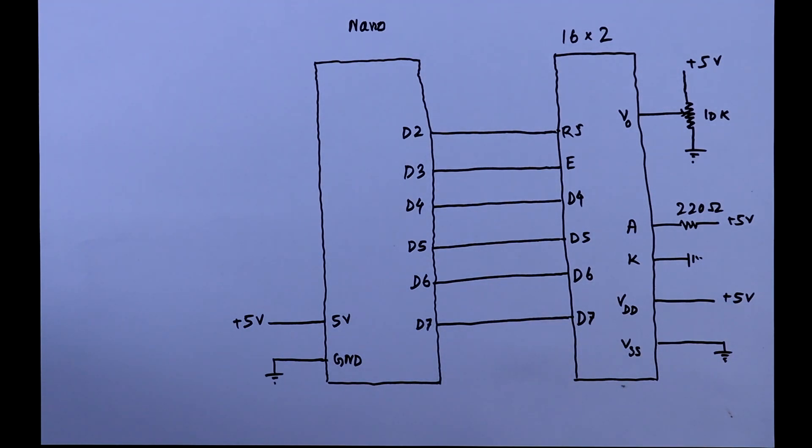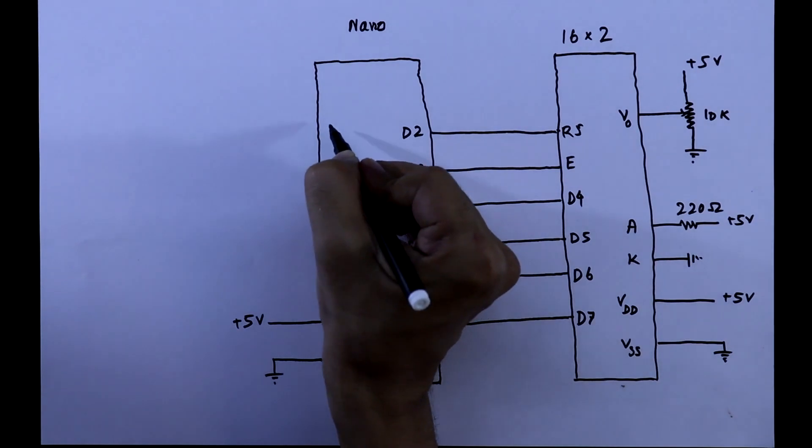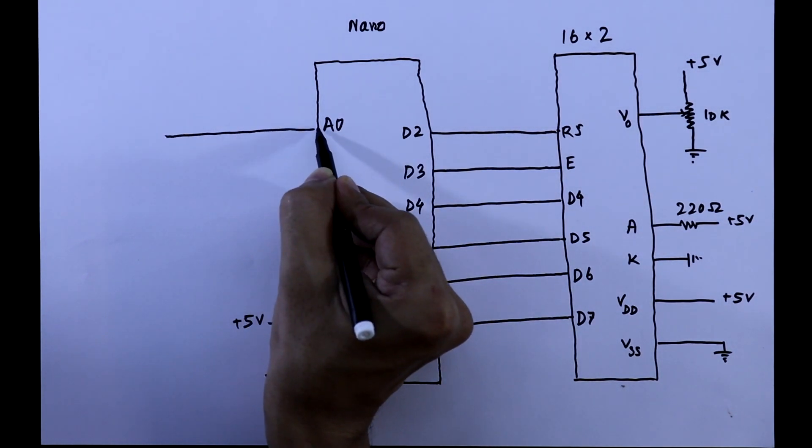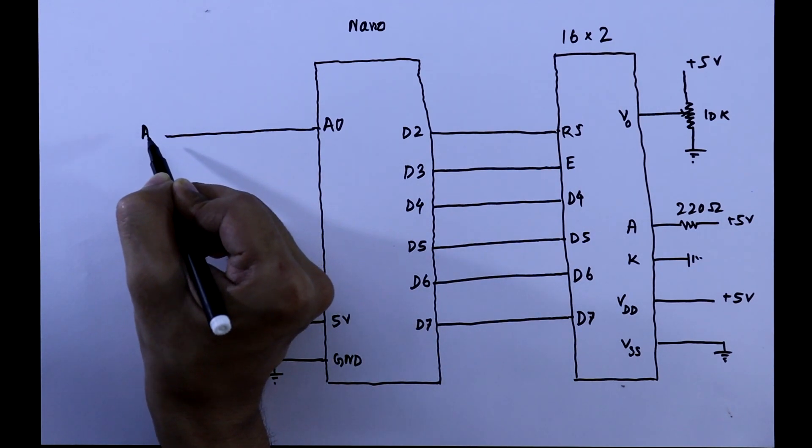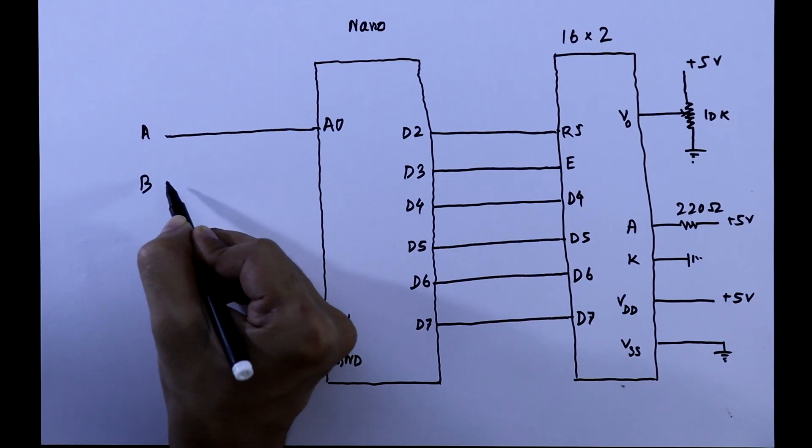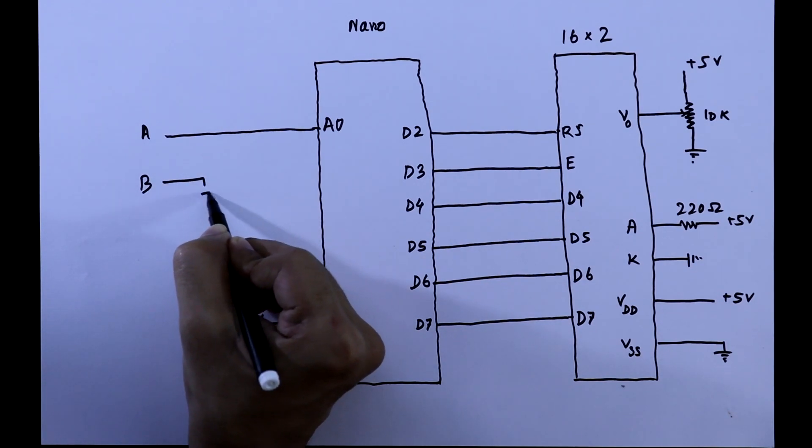Now we have to connect the test pin. For this we will use A0 pin. We will test the resistor to A0 pin and it is terminal A, and the second terminal of the resistor, that is terminal B, will be connected to the plus 5V.